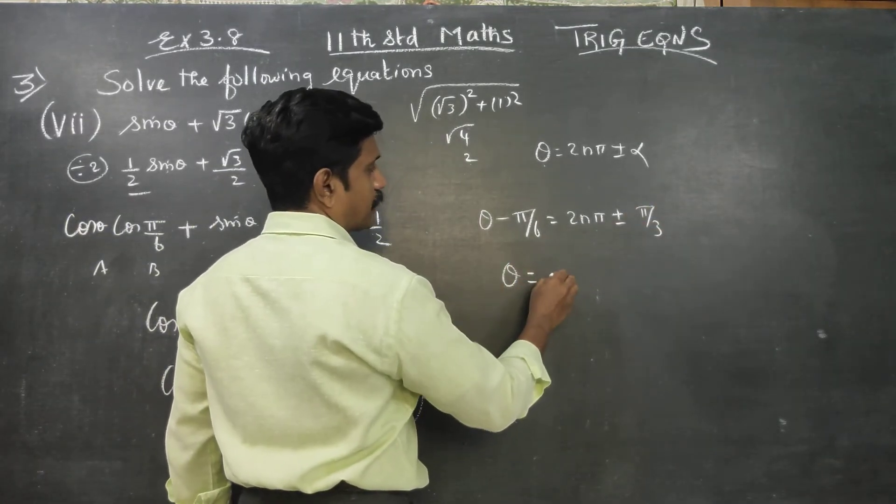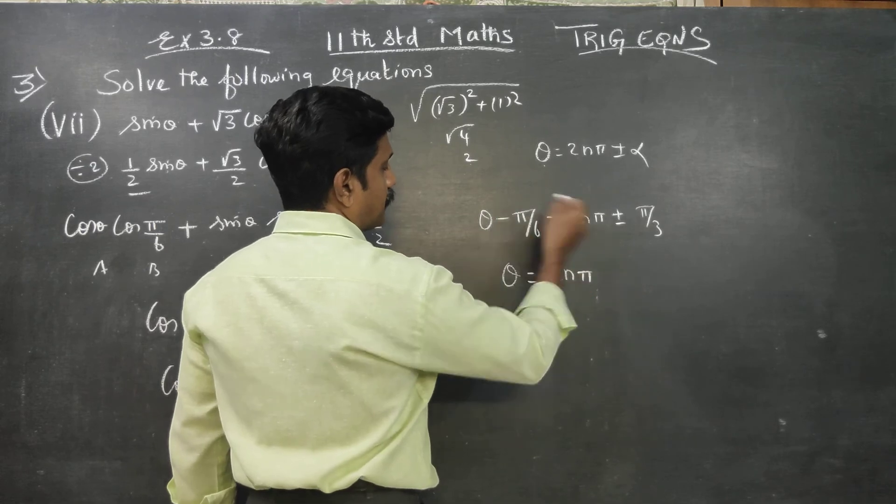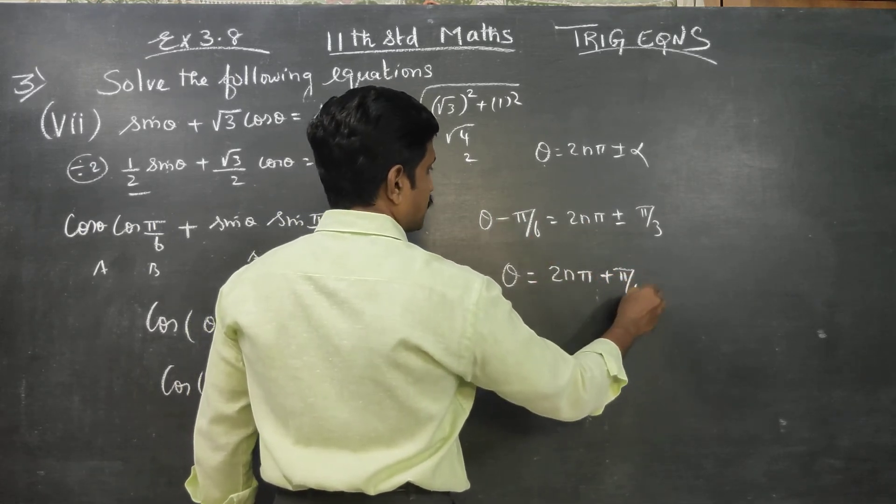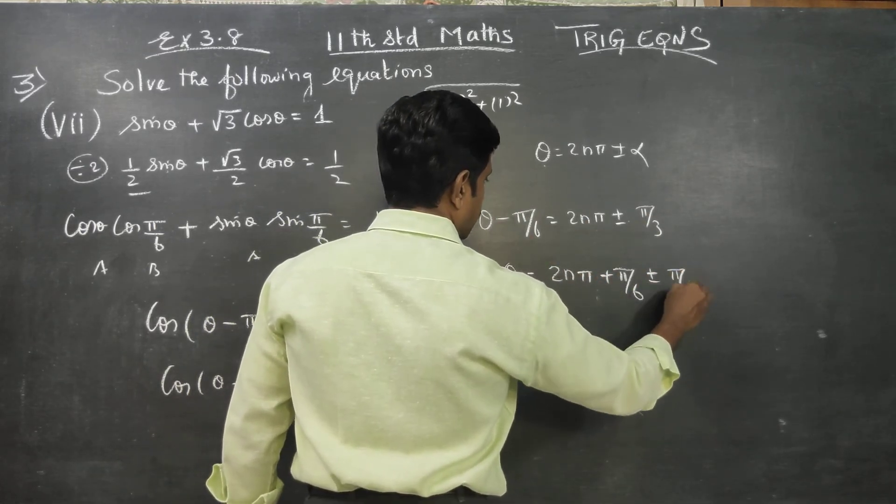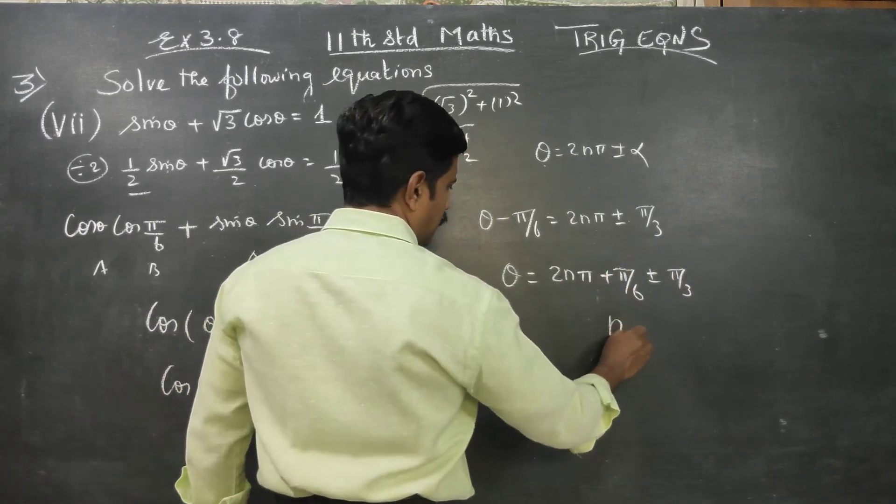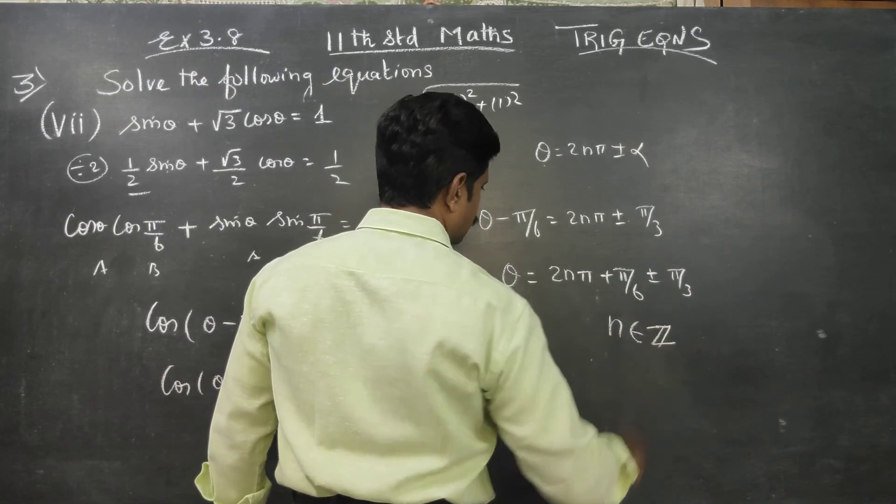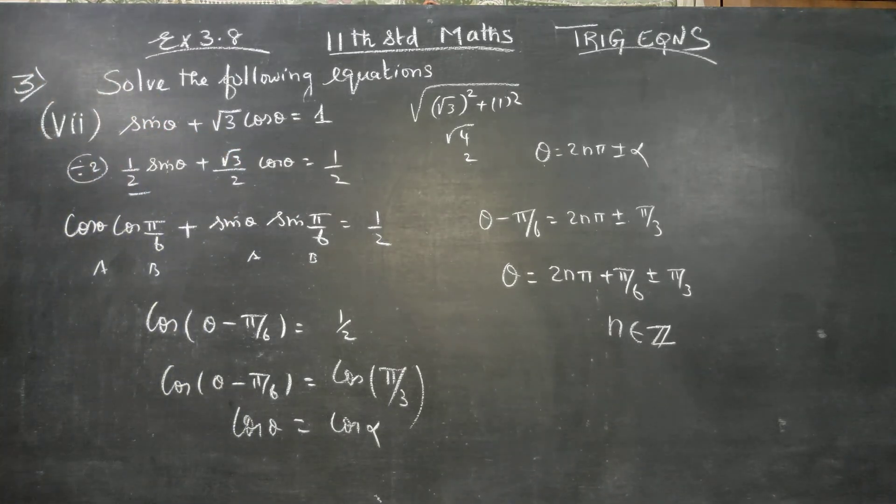Theta equals 2n pi minus pi by 6 plus or minus pi by 3. That is our solution.